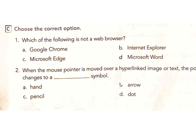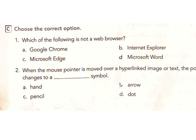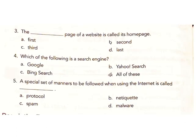C. Choose the correct option. Question 1: Which of the following is not a web browser? A. Google Chrome, B. Internet Explorer, C. Microsoft Edge, D. Microsoft Word. Answer: D. Microsoft Word. Question 2: When the mouse pointer is moved over a hyperlinked image or text, the pointer changes to a symbol. A. Hand, B. Arrow, C. Pencil, D. Dot. Answer: A. Hand. Question 3: The main page of a website is called its...